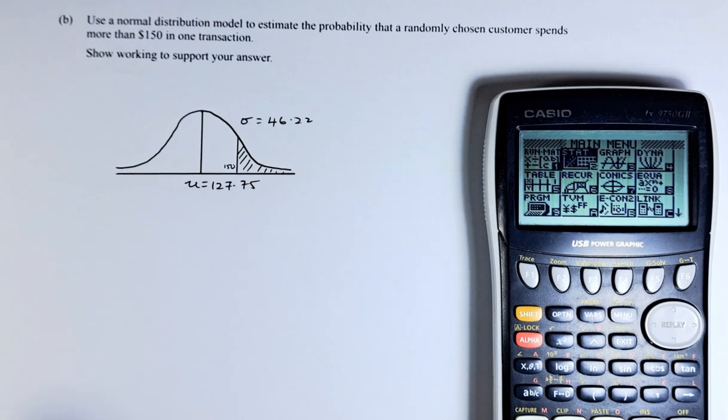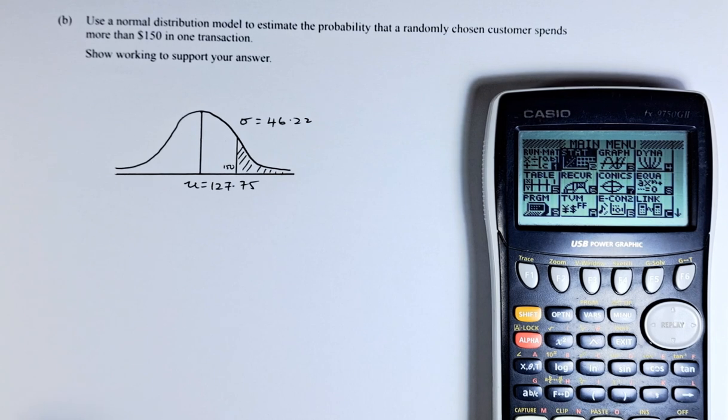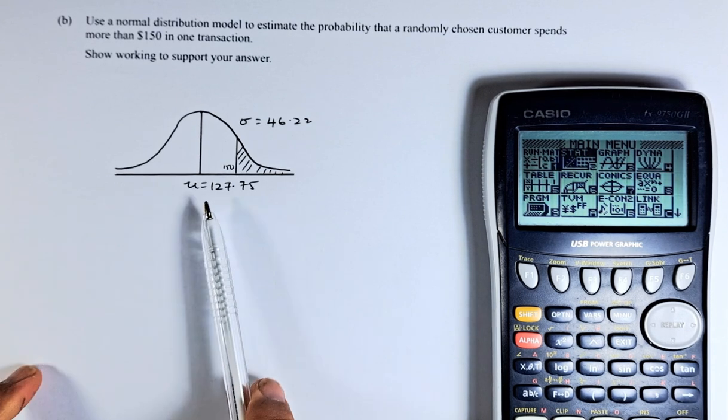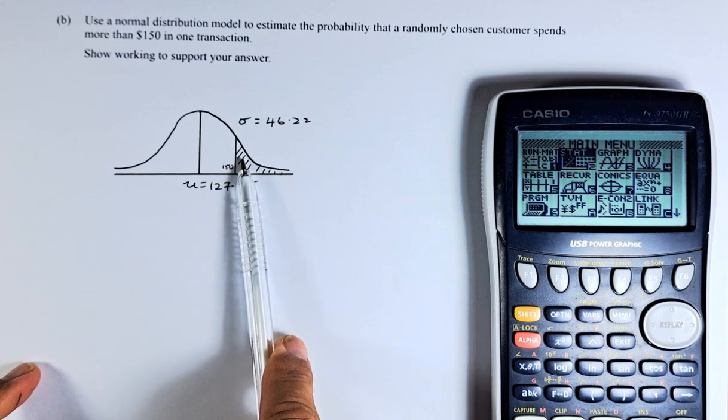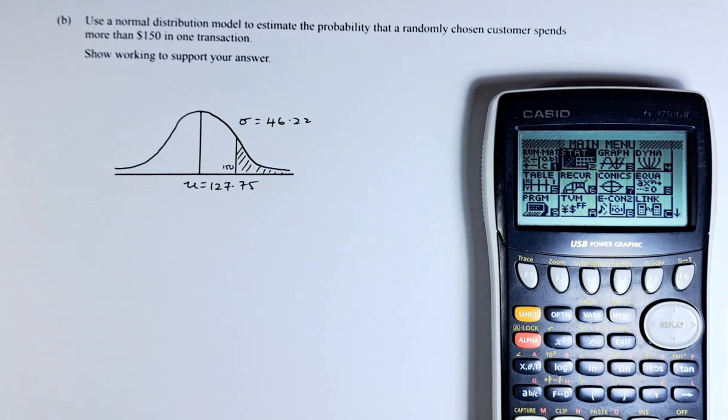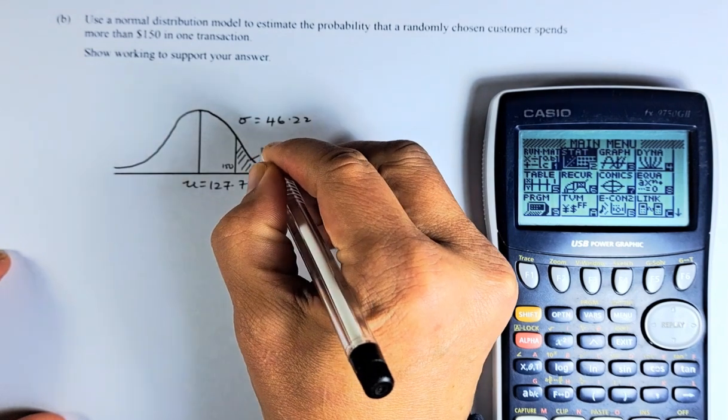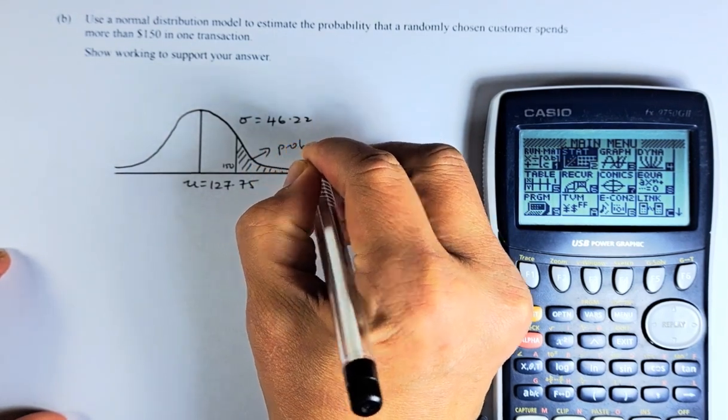And we are going to do the question based on what is given there. Use a normal distribution model to estimate the probability that a randomly chosen customer spends more than $150. So the mean is $127.75. $150 is to the right of it. So more than $150, we are looking at this area. And we are going to calculate the area under the curve or the probability.